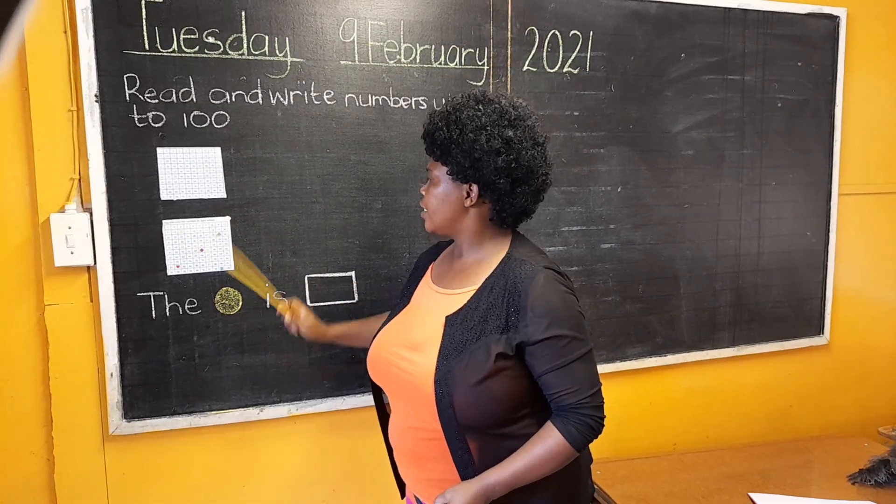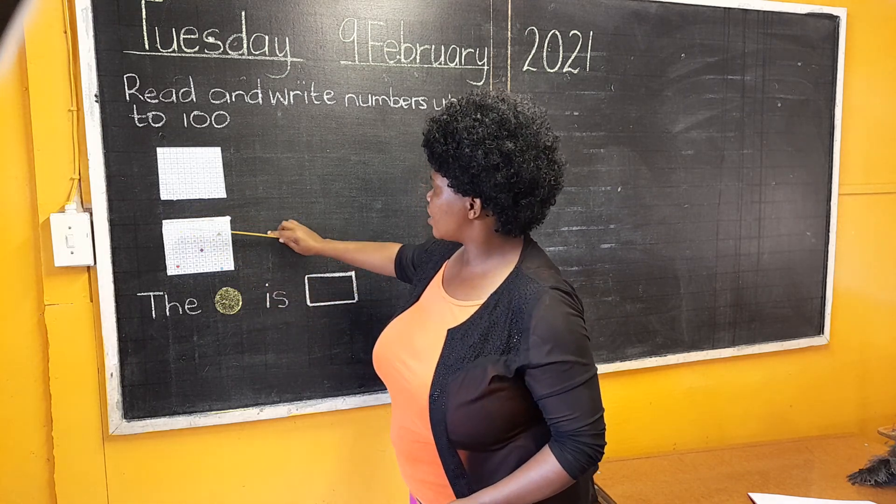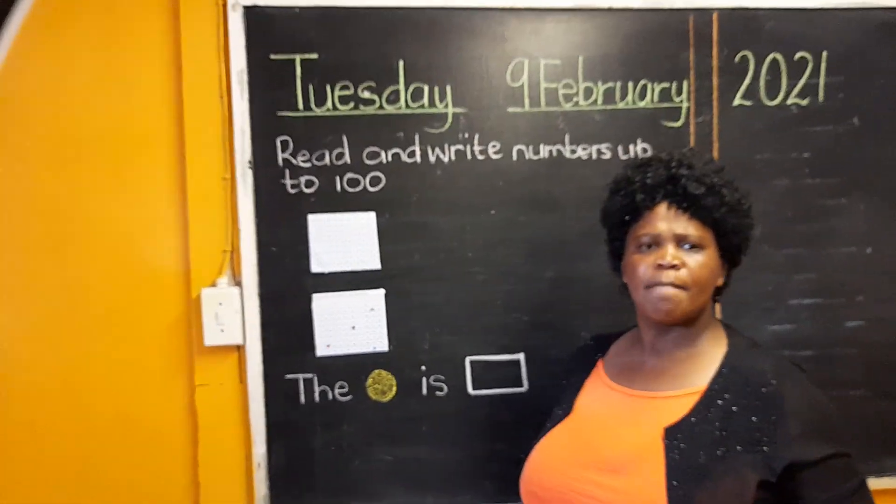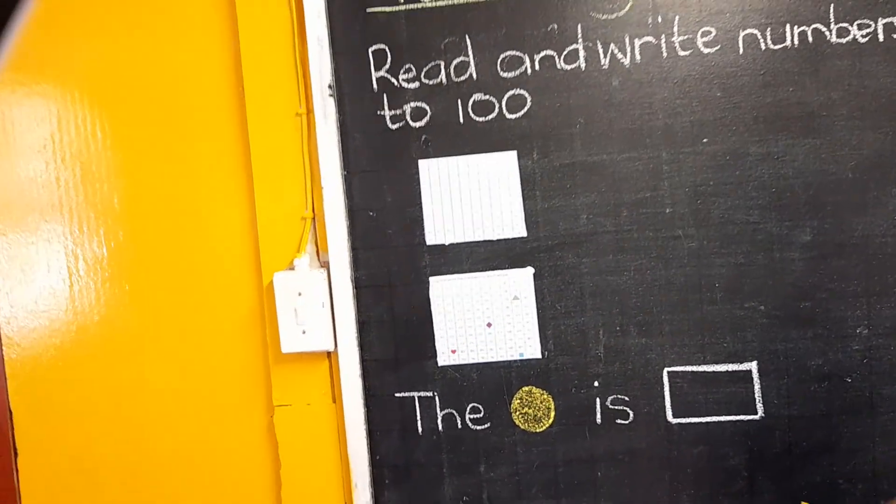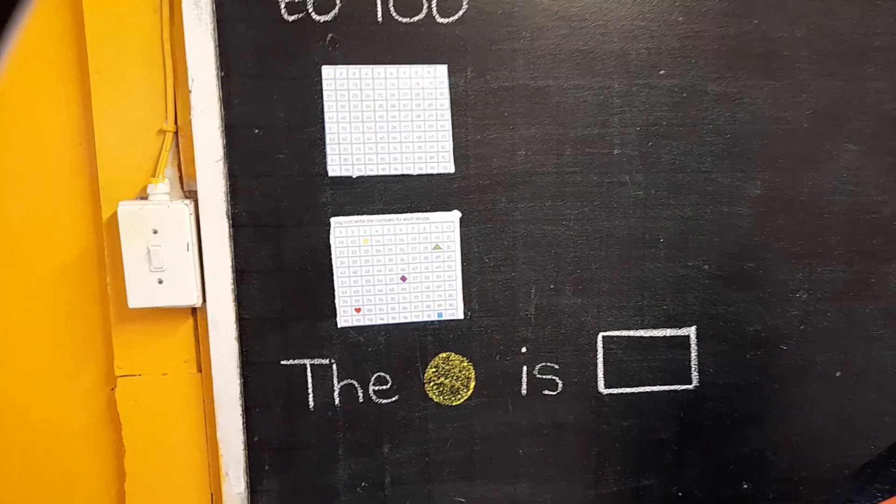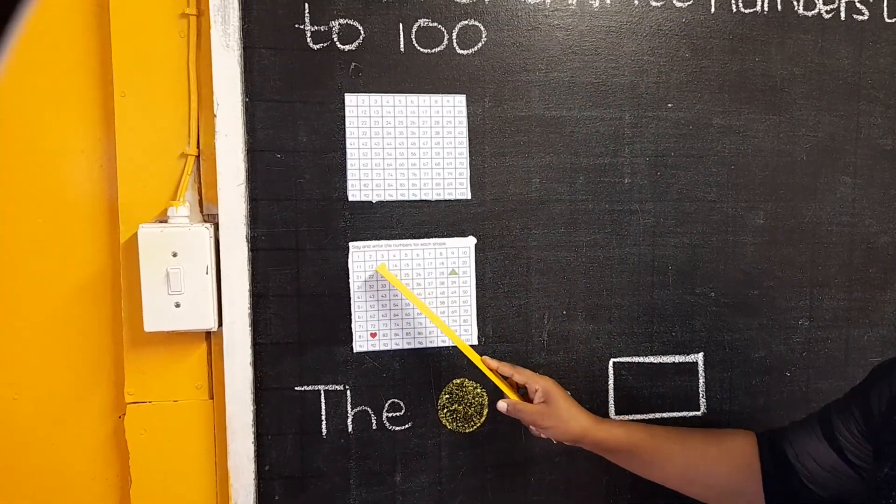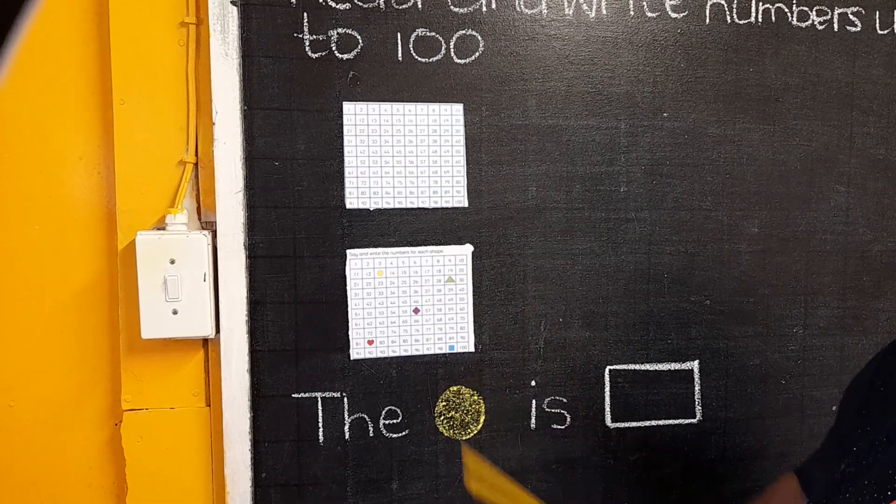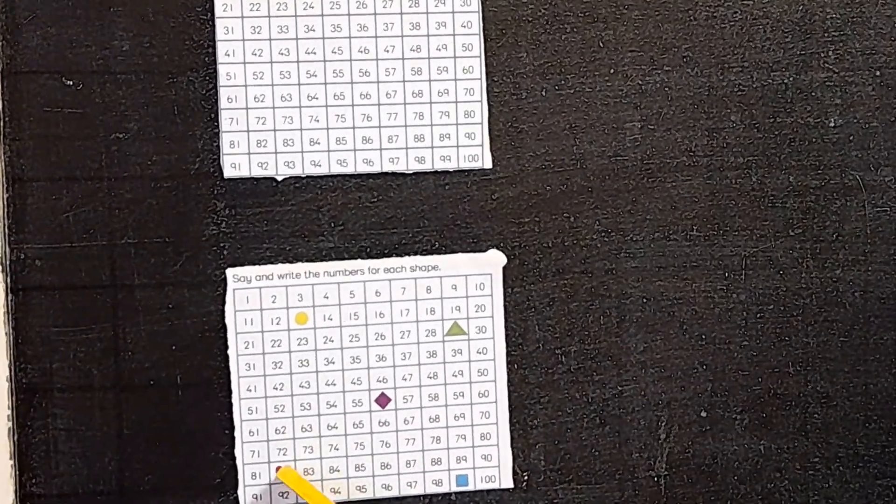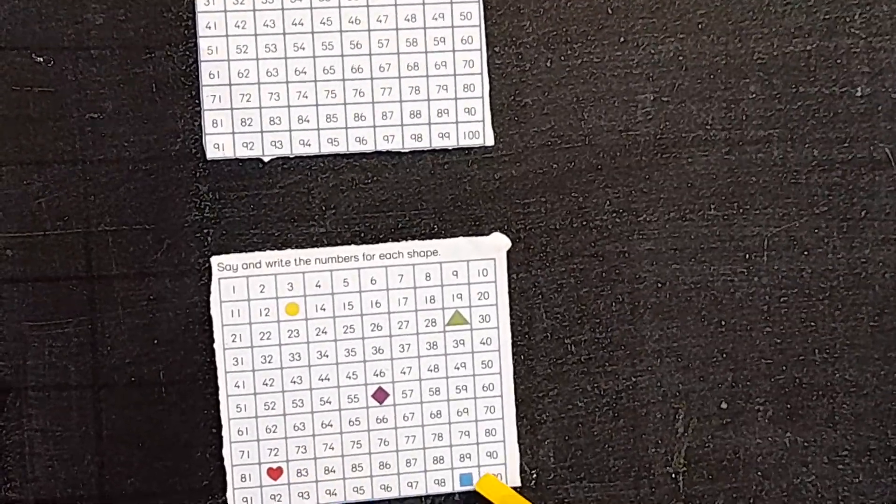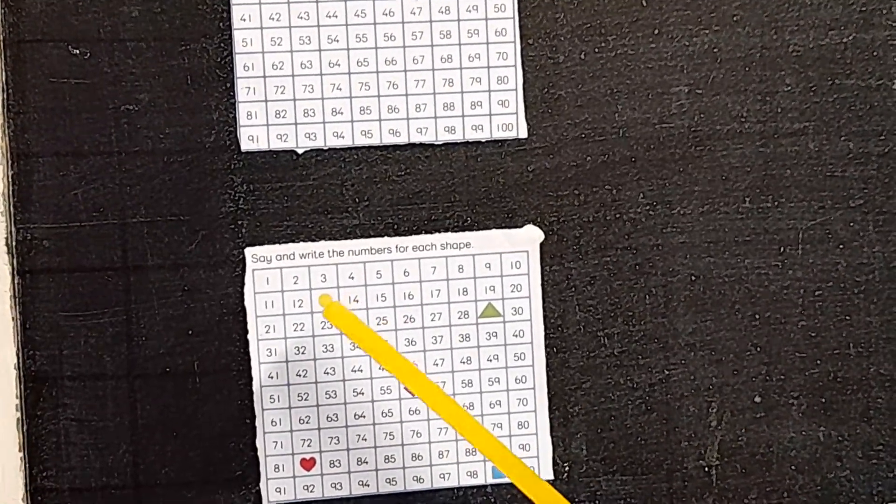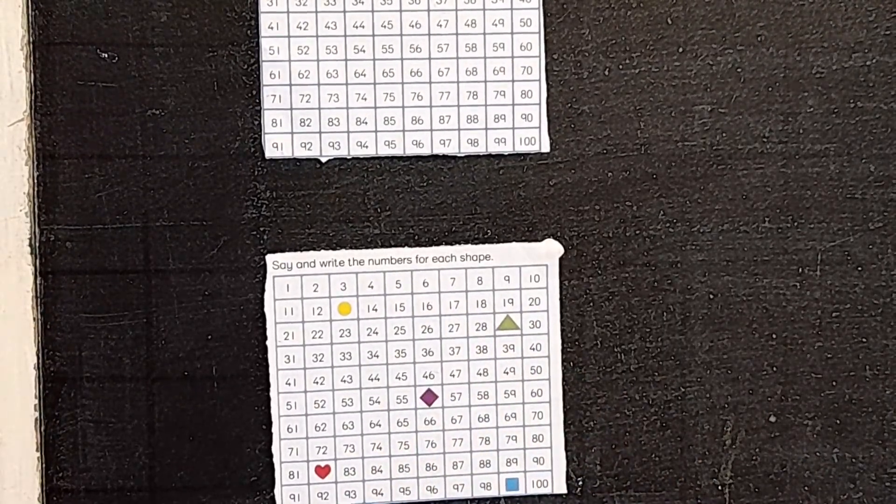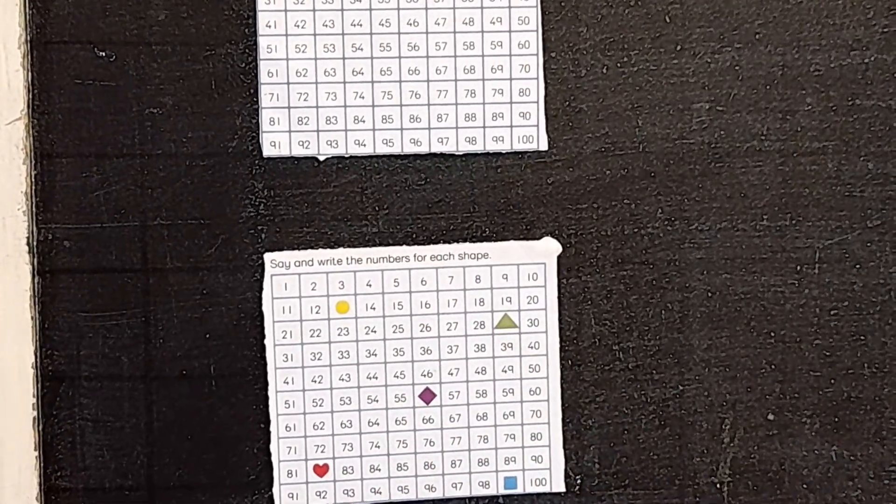Let's go together. Here I have the 100 square number chart with some of the numbers missing. Where the numbers are missing there are some shapes. I've got a circle here, a triangle, a kite or diamond, a heart, and a square. So there are some missing numbers. What are the missing numbers?